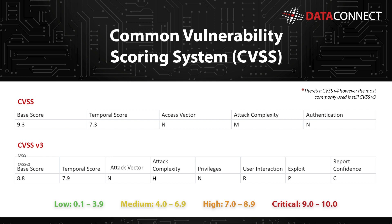The overall base score is derived from various metrics such as attack vector. The attack vector metric reflects the context by which vulnerability exploitation is possible. In this case, the N stands for network. Such a vulnerability is often termed as remotely exploitable, and it can be thought of as an attack being exploited over the network. Another value could be L, which means local, so an attacker must interact locally directly with a machine to exploit it.